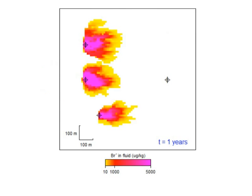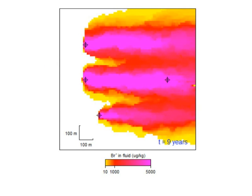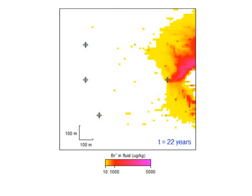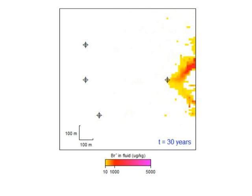The first animation shows the transport of the bromide ion, a non-reactive tracer. Since it doesn't sorb according to our model, bromide travels at the same velocity as the groundwater, and after 40 years of pumping, most of it has exited the domain.